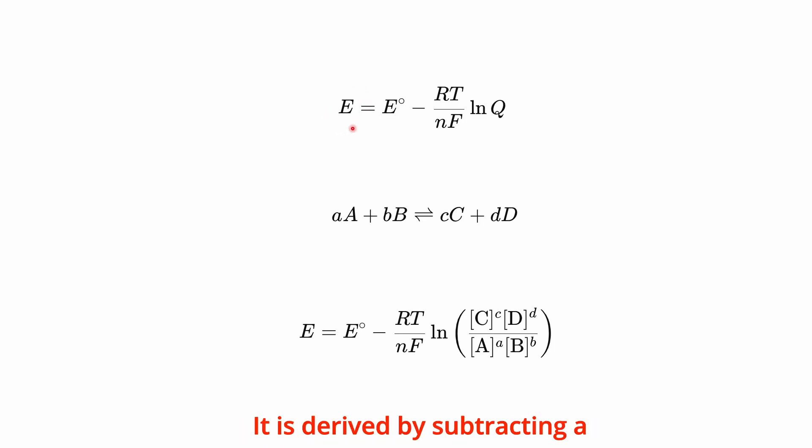It is derived by subtracting a term from the potential under standard conditions, which equals the gas constant R times the temperature T, divided by the product of the equivalent number N and the Faraday constant F, multiplied by the logarithm of the reaction quotient.